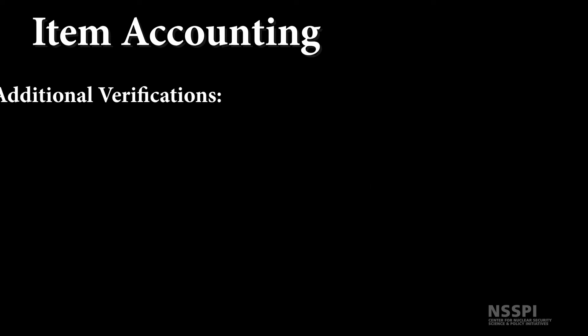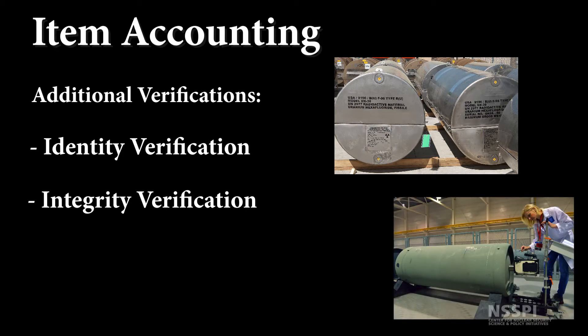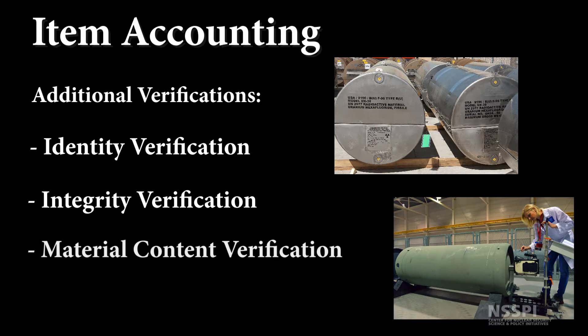There are additional verifications done on items in item accounting. Since items are discrete, we should also be able to identify them with a serial number or some other form of identification. If the fuel bundles are misidentified, or the integrity of the item is compromised — say, by fuel pins having been removed from the fuel bundles — then this would trigger a further investigation. Items will also be checked for material content or radiation signatures to verify that they are consistent with accounting records.